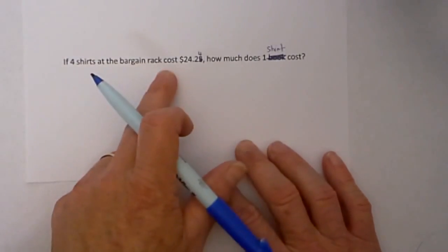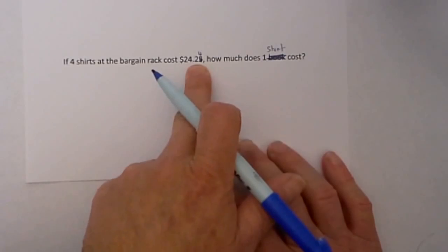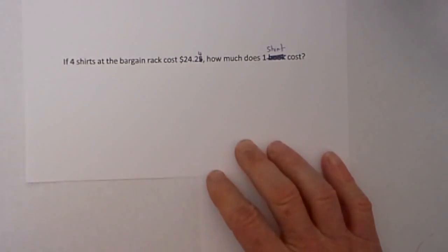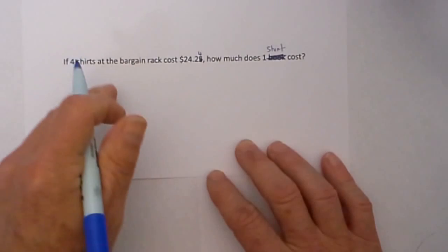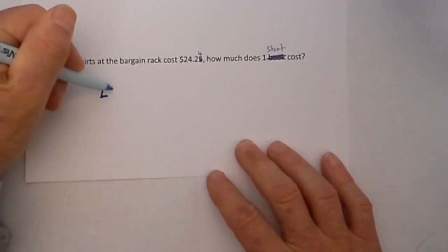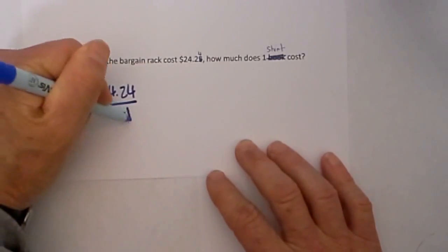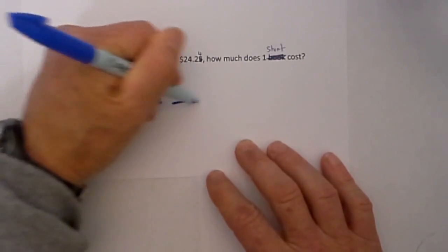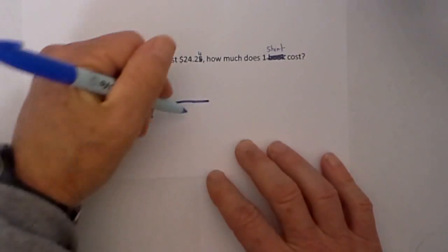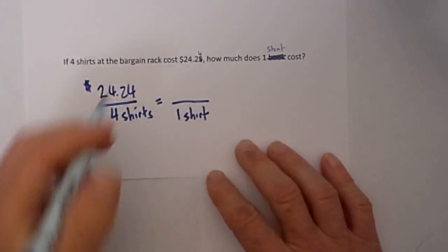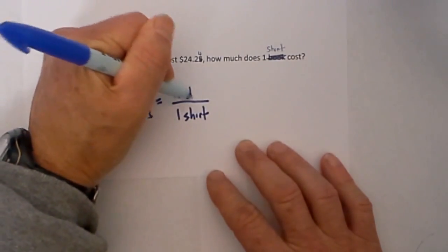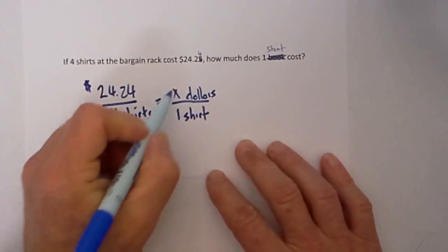If 4 shirts at the bargain rack cost $24.24, how much does 1 shirt cost? Let's set up a proportion. $24.24 is how much 4 shirts cost. With the proportion I need the same things, 1 shirt. So I will put 1 shirt on the bottom because the shirt and the shirt match up.